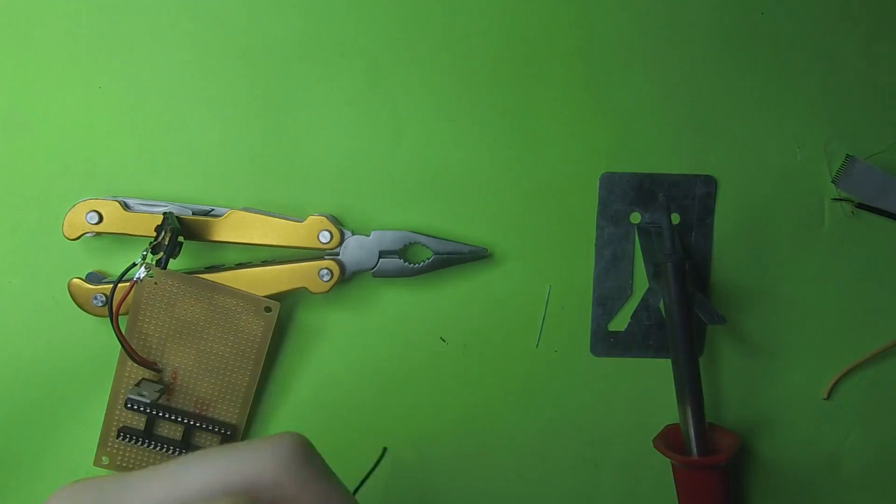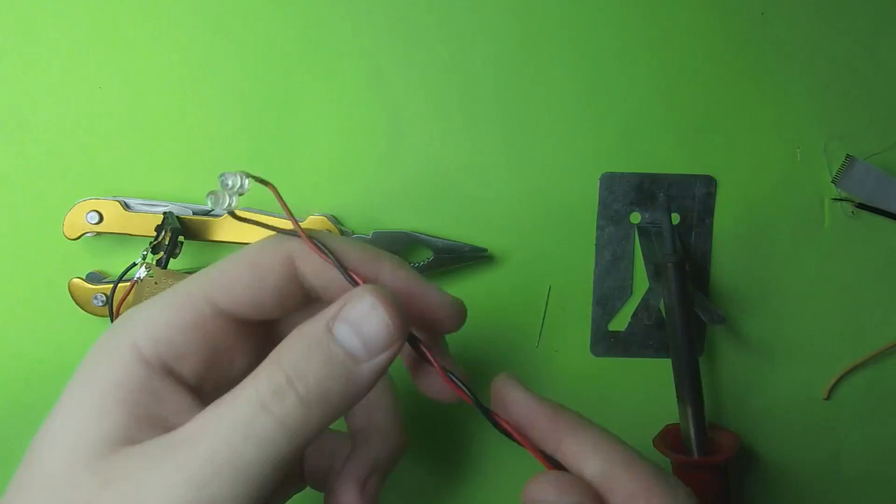Okay, then I soldered black and a red wire to my LEDs. And I twisted the wire up.